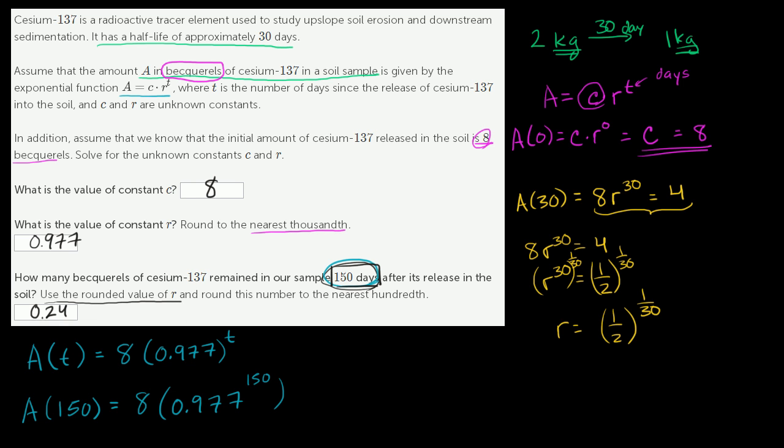Well, instead of writing 0.977, let's write A of t as being equal to 8 times our R. This is an approximate value for R. If we wanted to be more exact, we can say that our R is 1 half to the 1 30th power. And we're going to raise that to the t power. Or we could say A of t is equal to 8 times 1 half to the t over 30 power.